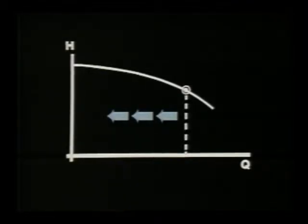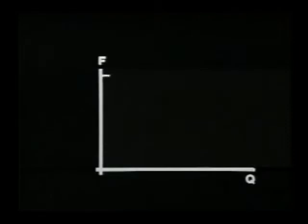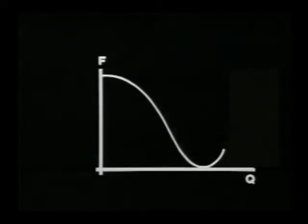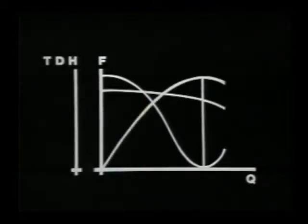As the operating point moves further away from the best efficiency point, the radial force increases until it reaches its maximum at shutoff. This can be shown graphically by comparing the radial force to the capacity throughout the operating range of the pump, and then superimposing it on the pump curve and the efficiency curve.